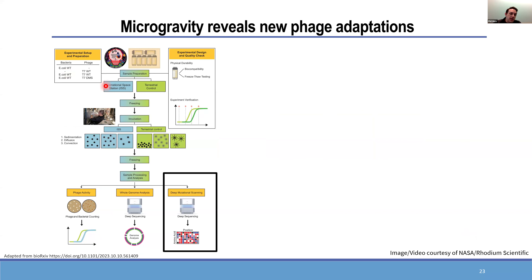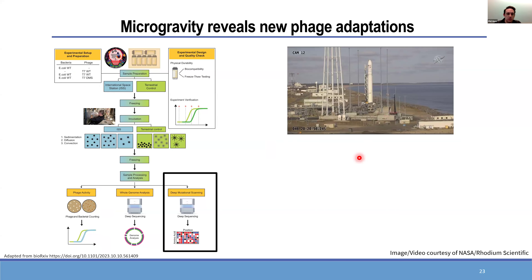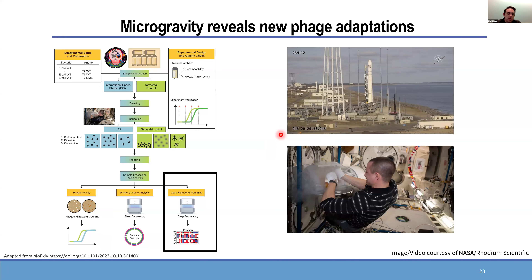We prepare samples terrestrially, mix the bacteriophage and bacterial host, freeze them, deliver to NASA, and they go up on a rocket. They're incubated — in this case for about 20 days in microgravity — with a little photo shoot with the astronaut taking them out of the freezer. Then they're frozen, come back down, and we analyze the data. In this study we look at how microgravity affects wild-type and engineered phage activity, and we sequence the phage and bacteria to pick up mutations. For the rest of this, I'll just focus on the DMS results — the same library tested previously on different strains, now tested in microgravity.